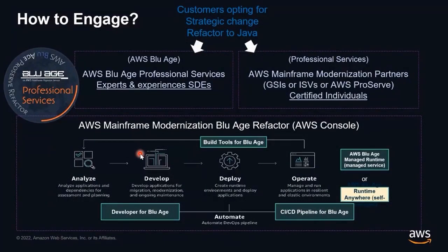The way to engage with us is either by going with a partner — which could be a GSI or an ISV partner — or going directly to the AWS BlueEdge professional services, where you can be in contact with experienced experts. This solution is not a tool; it's a complete end-to-end solution for application modernization, including the assess, the rediscovery of all legacy dependencies, and transformation into a Java Spring solution before deploying to the AWS BlueEdge managed runtime or to a runtime anywhere on another premise.